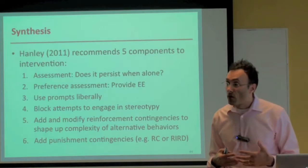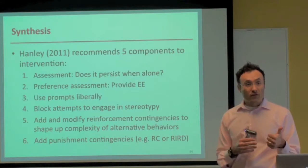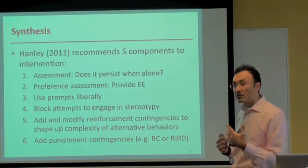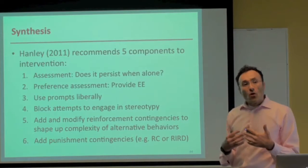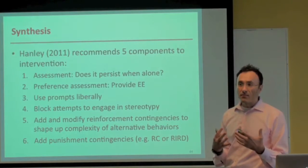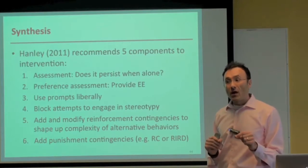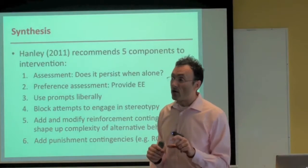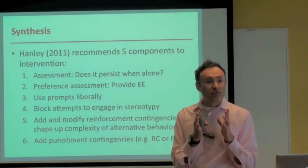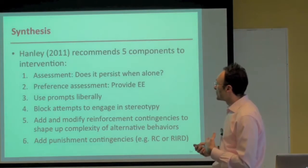Second: assess for preference using the RAISD — the Reinforcer Assessment for Individuals with Severe Disabilities — and the Multiple Stimulus Preference Assessment without Replacement. The MSWO has been refined by Carr, Nicholson, and Higby, showing that doing it three times instead of five yields equally good results, making it even more efficient. Whether using environmental enrichment or reinforcement-based contingencies, we still need to find highly preferred items.